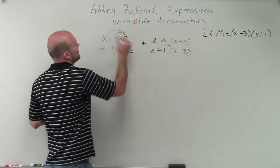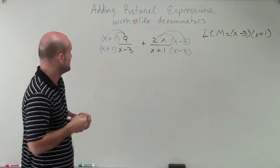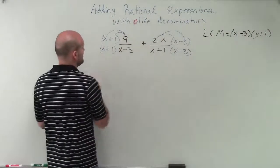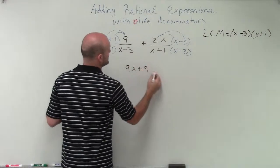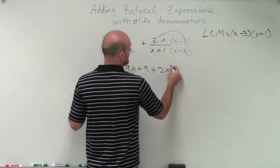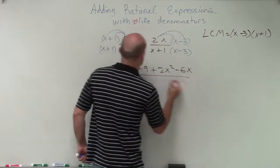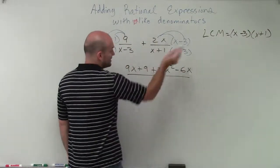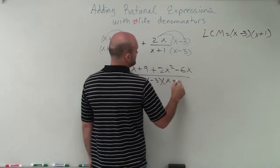Now, I just need to make sure I apply my distributive property in my numerators to get them completely the same. So by applying distributive property over here, I have 9x plus 9 and then plus 2x times x is 2x squared, and 2x times negative 3 is negative 6x. And that's going to be all over my common denominator, my least common denominator, which will be x minus 3 times x plus 1.